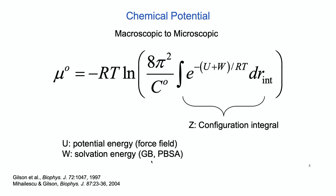Here's the classical equation for a chemical potential. We have the gas constant, temperature, and 8 pi squared accounting for rotational motion of the system. This is the standard concentration. And we have this configuration integral, which includes the potential energy — calculated with a force field and a solvation energy using a continuum model. But this integral is over all space, so it's a very difficult integral to calculate.